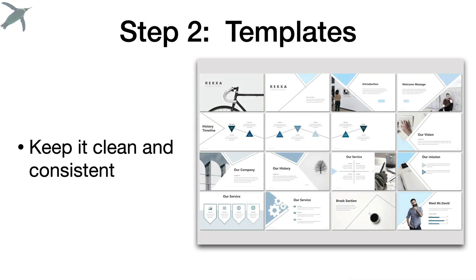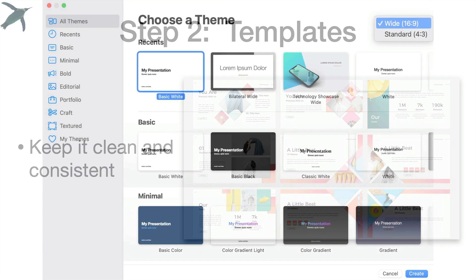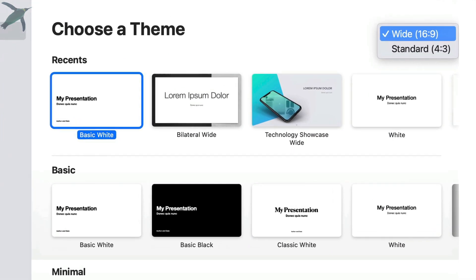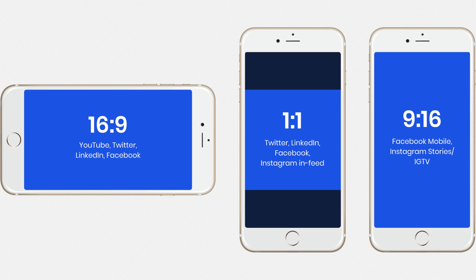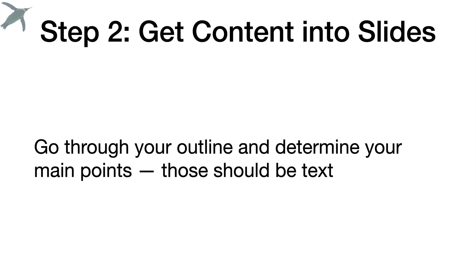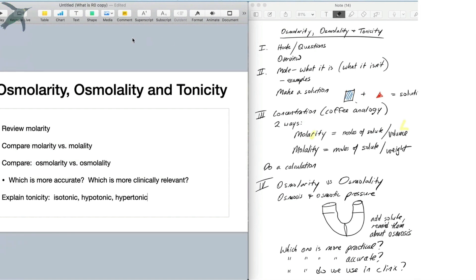Templates are very personal choices and can be very discipline-specific. I just recommend clean and consistent templates. Also make sure you pay attention to aspect ratio — you're going to want to use a 16 by 9 aspect ratio for standard video. Next, go through your outline and determine your main points, which should be text usually. I like to have my notes right next to my keynote slides and start to bring that text over.